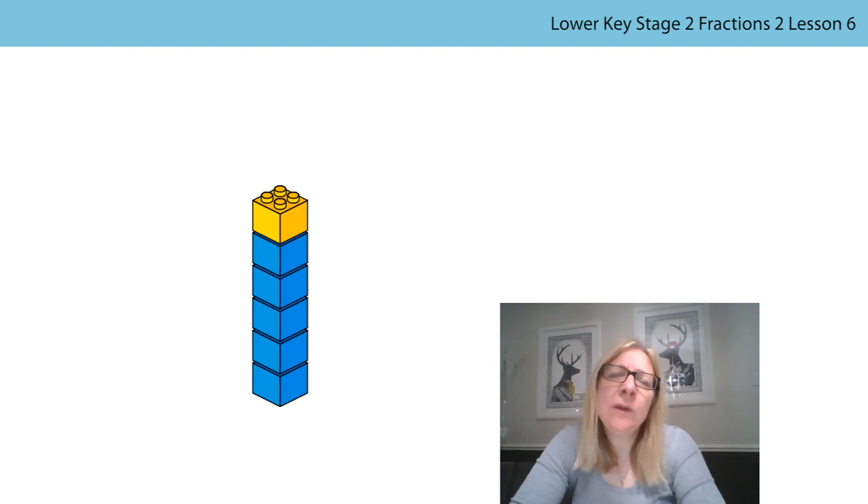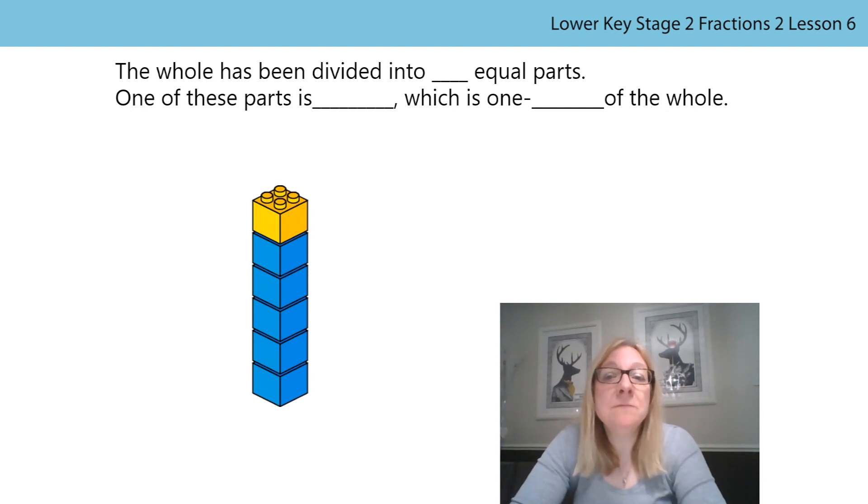I wonder if we could calculate what fraction of the tower is yellow. These stem sentences are familiar to you and may help. I will say the sentences first and then see if you can repeat them back to me, filling in the blank spaces. The whole has been divided into equal parts. One of these parts is, which is one of the whole.